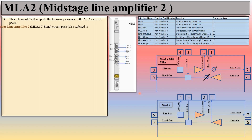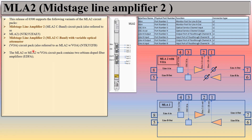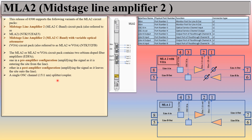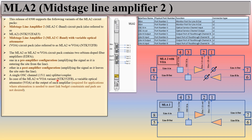The MLA2 circuit pack and the MLA2 with VOA circuit pack both contain two EDFAs — one in pre-amplifier configuration and one in post-amplifier configuration — and a single OSC channel at 1511 nm. In the MLA2 with VOA variant, a variable optical attenuator is placed at the output of each amplifier. The VOA can attenuate the output of both EDFAs.